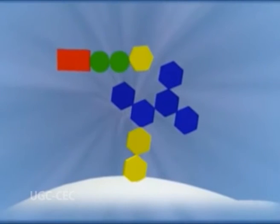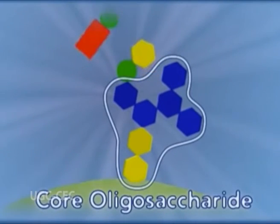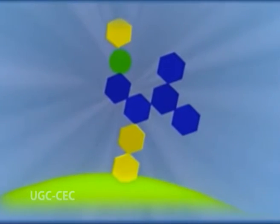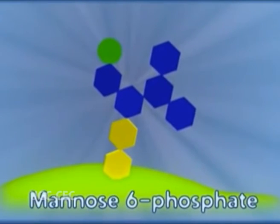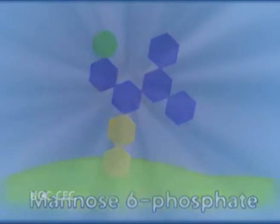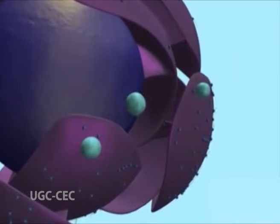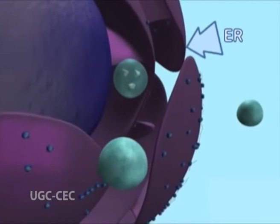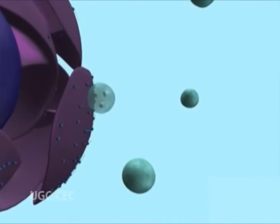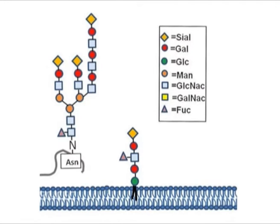The processing of N-linked oligosaccharides of lysosomal proteins differs from that of secreted or plasma membrane proteins. Rather than initial removal of three mannose residues, proteins destined for incorporation into lysosomes are modified by mannose phosphorylation. In the first step, N-acetyl glucosamine phosphates are added to specific mannose residues, probably while the protein is still in the cis-Golgi network. This is followed by removal of the N-acetyl glucosamine group, leaving mannose-6-phosphate residues on the N-linked oligosaccharide.